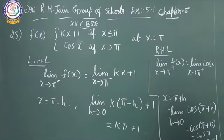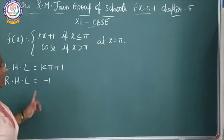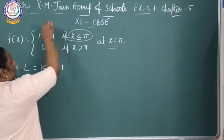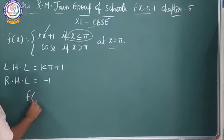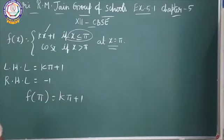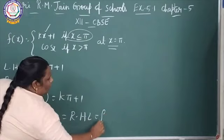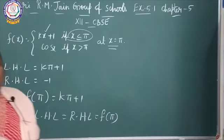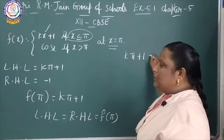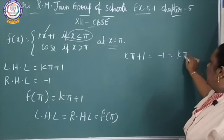So left hand limit is k pi plus 1 and right hand limit is minus 1. Now for f of pi: since x equals pi satisfies x less than or equal to pi, f of pi equals k pi plus 1. For continuity, left hand limit equal to right hand limit equal to f of pi. So k pi plus 1 equals minus 1 equals k pi plus 1.